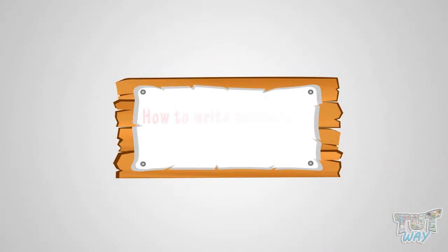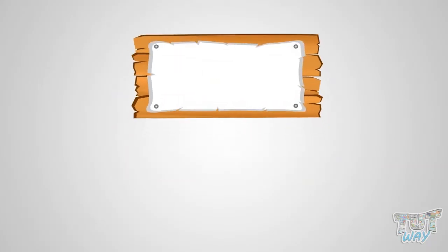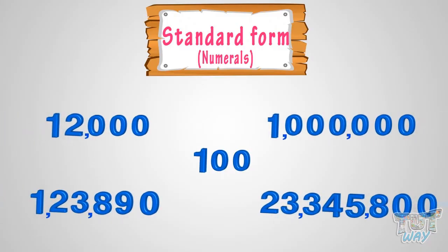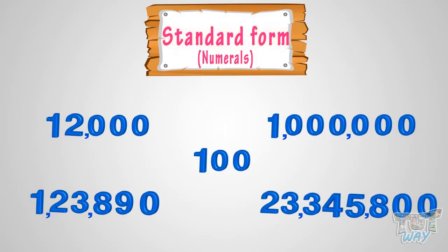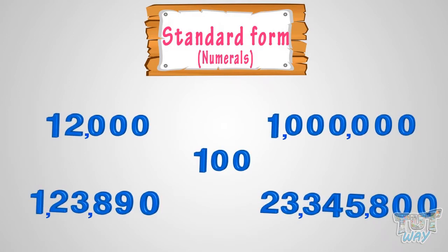We can write numbers in different forms. The first one is the standard form, that is in numerals. Here are a few numbers — all these numbers are written in their standard form, where we use all the numerals and commas to differentiate the periods.